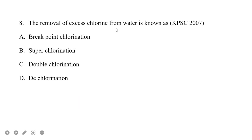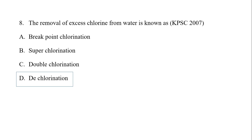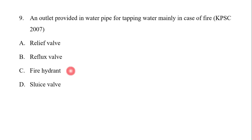The removal of excess chlorine from water is known as dechlorination. This is different from breakpoint chlorination, superchlorination, and double chlorination. Dechlorinating agents include sulfur dioxide and sodium sulfate. Sodium sulfate is commonly used as a dechlorinating agent.